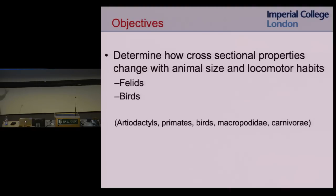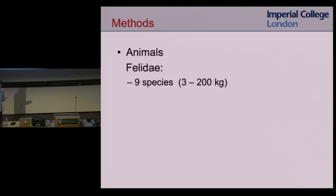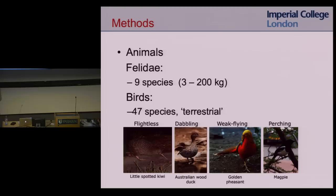It's a broad project covering five different clades of animals. I'm only going to present work from two: the felids or cats, and the birds. We looked at nine species of cats ranging from the domestic house cat at about three kilograms to a lion at 200 kilograms. In the birds, we looked at 47 different species of terrestrial birds — birds that get around mostly by walking.